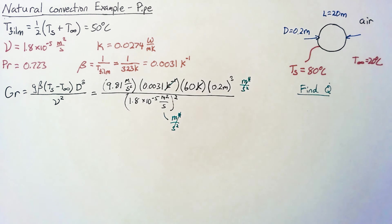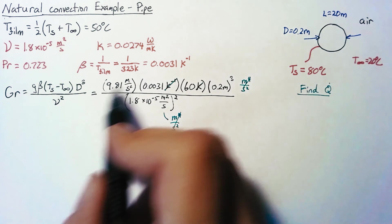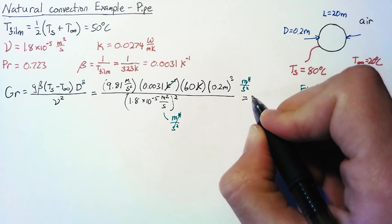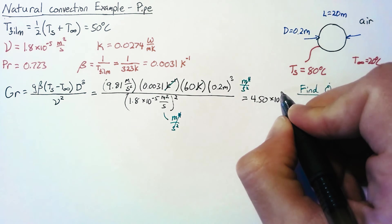The main reason we do that is to make sure that we didn't make any mistakes putting things in the wrong units or something similar. Now that we have all this, we can plug in those values and we get that our Grashof number is 4.50 times 10 to the seventh.